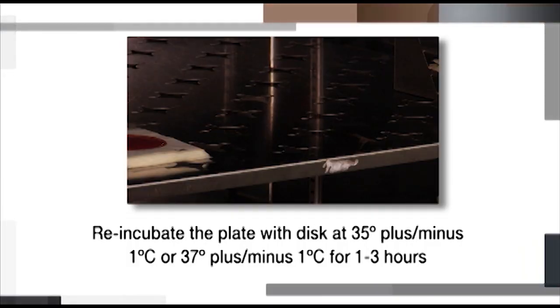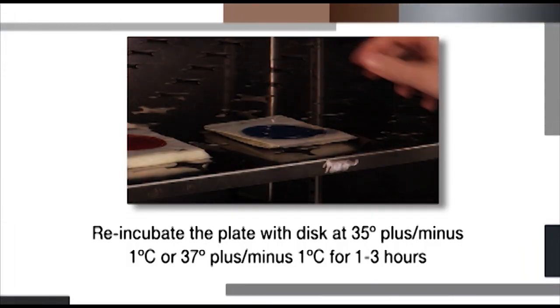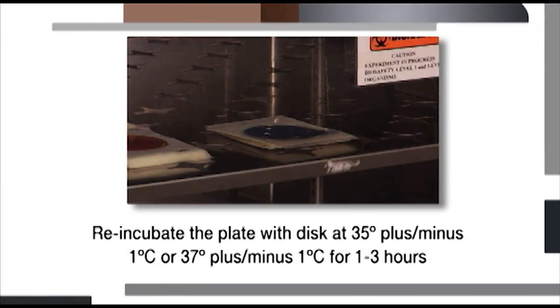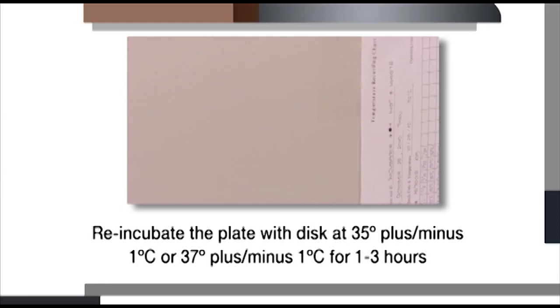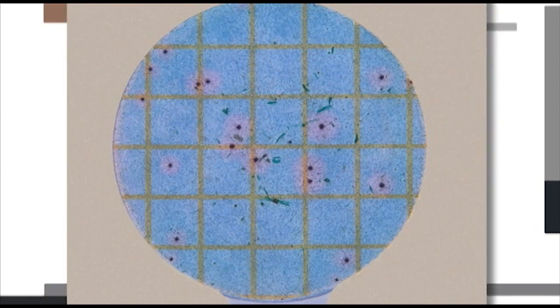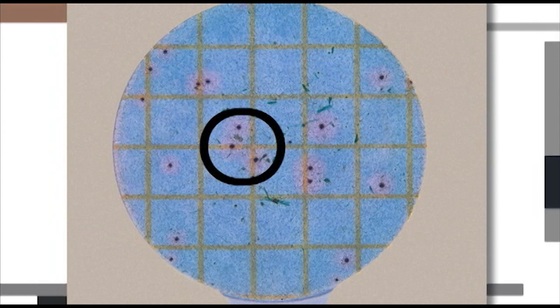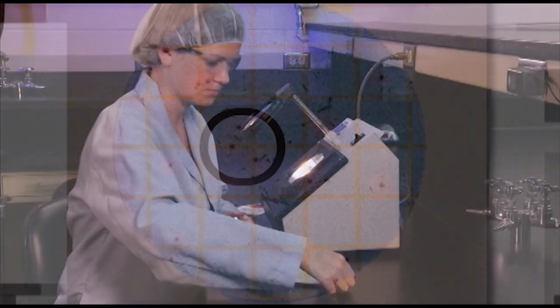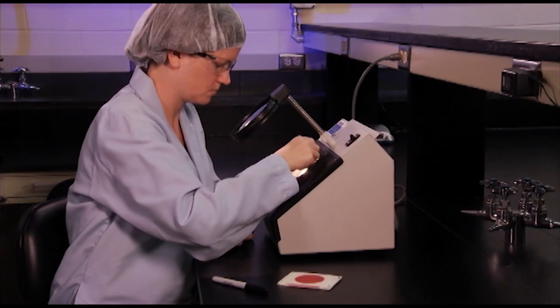Re-incubate the plate with disc at 35 plus or minus 1 degree Celsius or 37 plus or minus 1 degree Celsius for 1 to 3 hours. An indicator in the Staph Express Disc causes the Staph aureus colonies to develop a pink zone surrounding the colony. After re-incubating the plate and disc for 1 to no more than 3 hours, count colonies with pink zones as Staph aureus. Good lighting is necessary for accurate counting.